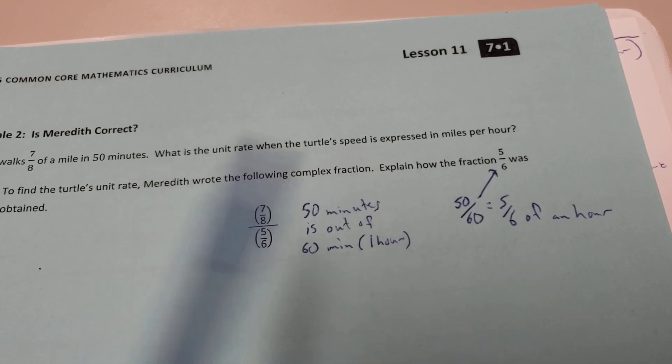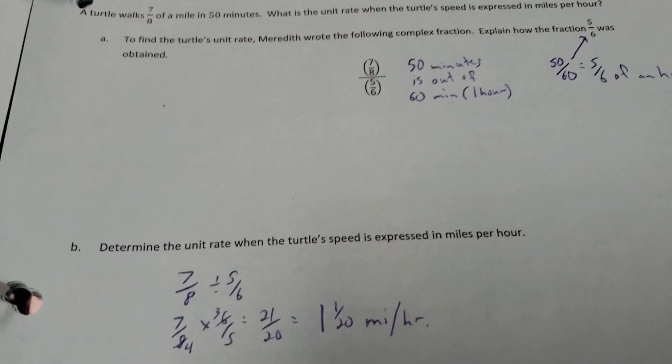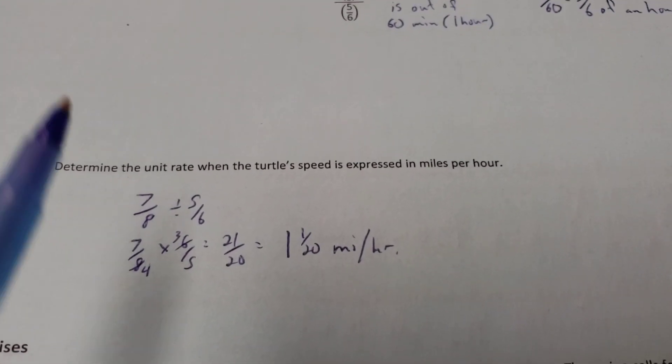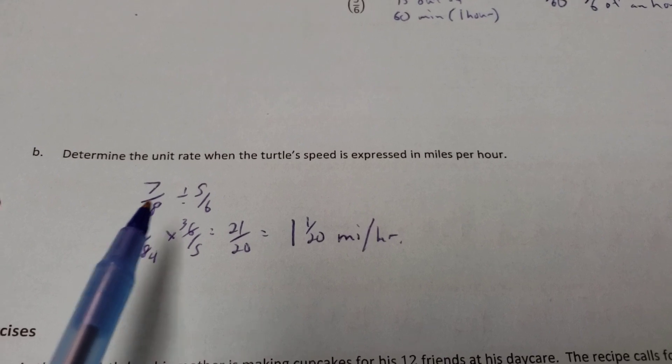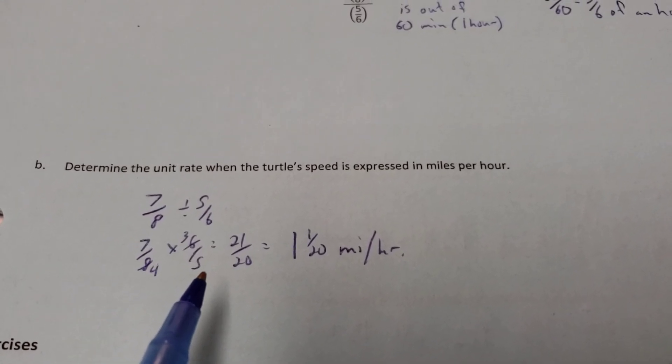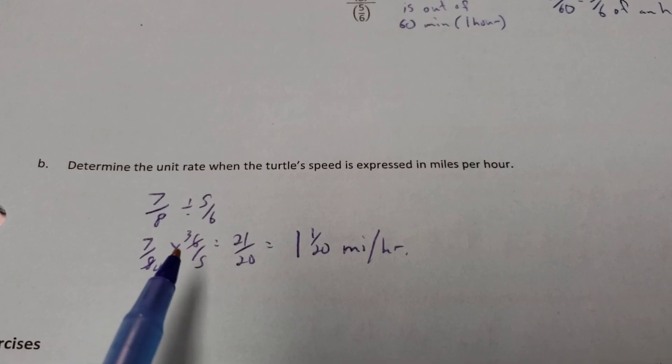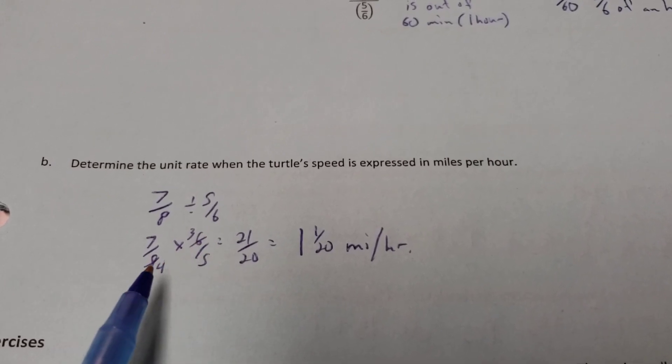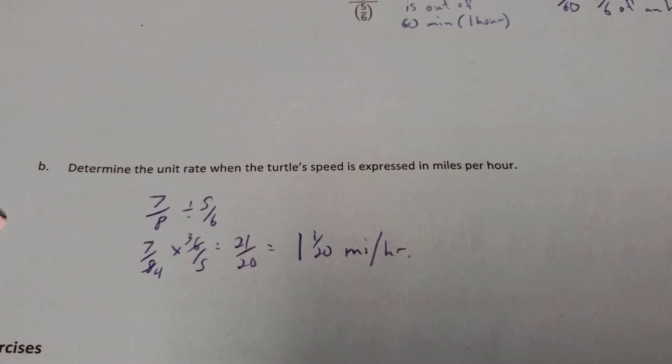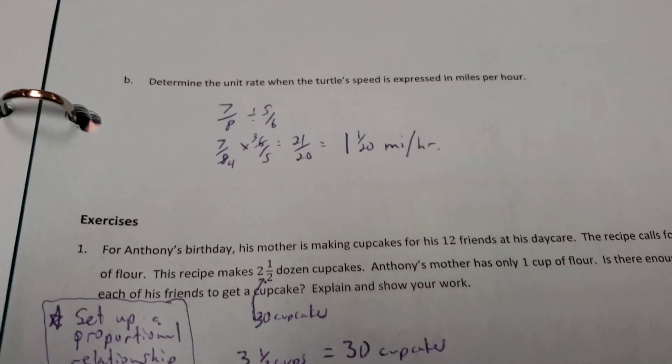So, explain how that fraction 5/6ths was obtained. 50/60ths is 5/6ths of an hour. Now, how could I use that? Determine the unit rate when the turtle's speed is expressed in miles per hour. Well, it goes 7/8ths of a mile and 5/6ths of an hour. 7/8ths divided by 5/6ths. We keep, change, flip. You can cross-cancel, actually, here, because you can divide the 6 and the 8 by 2. You get down to 3/4ths. You get 21/20ths. Convert. And you get 1 and 1/20th miles per hour. So, just a little over a mile per hour.